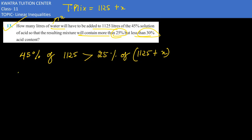Simplify it on the left side. This would give you 45 over 100 into 1125 greater than 25 by 100 into 1125 plus x. Simplify it. So I can cancel 100 with 100, 25 with 45. This would give you 5, this would give you 9.